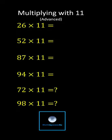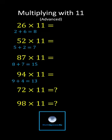Multiplying with 11 advanced. First find the sum of the digits of the factor that is not 11. The sum is either a single digit number or a two digit number.